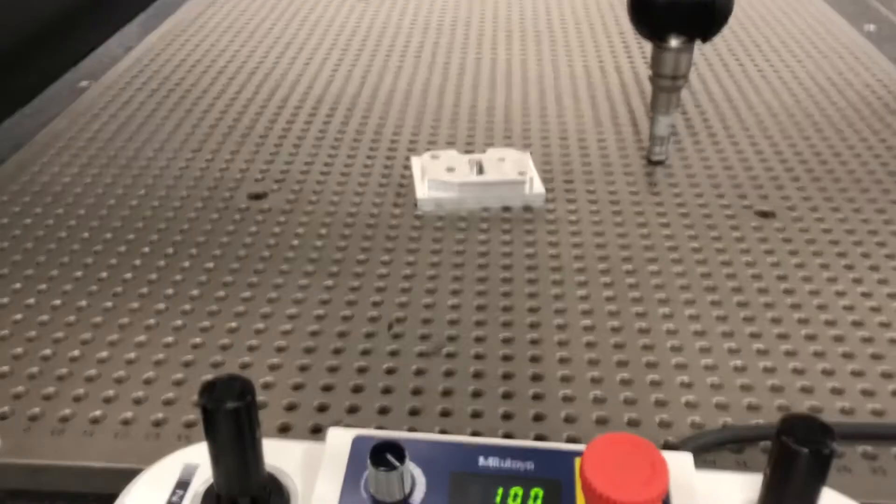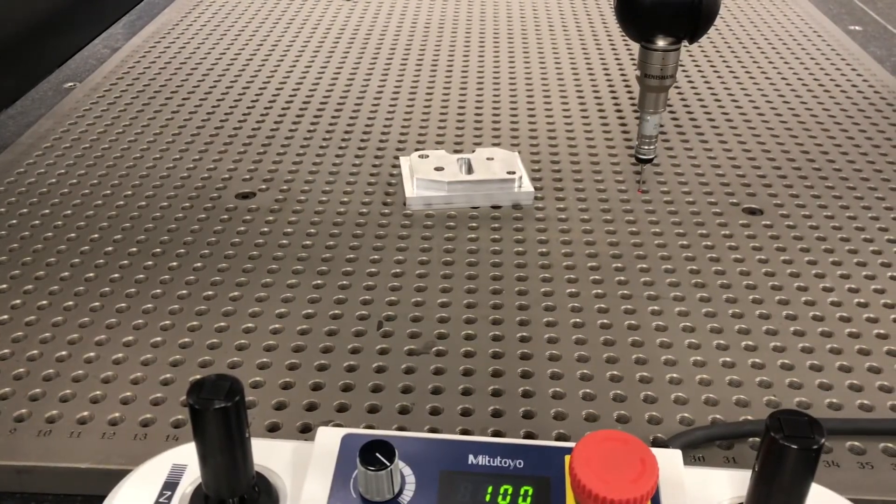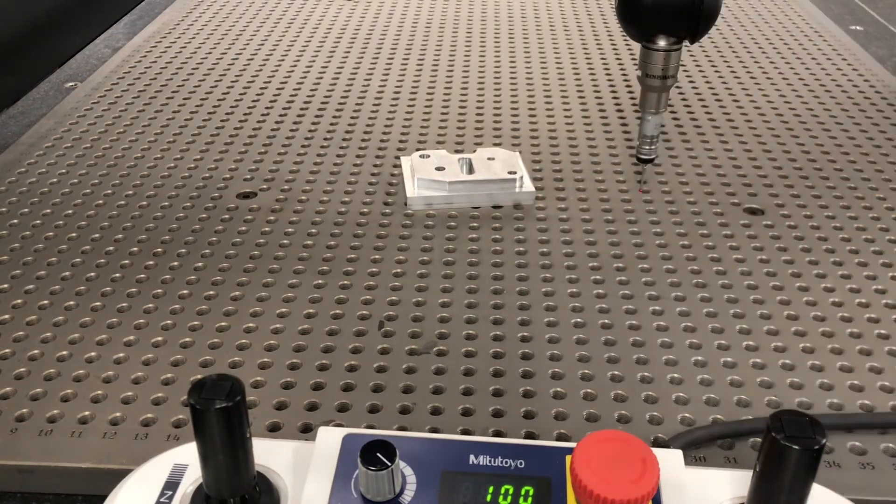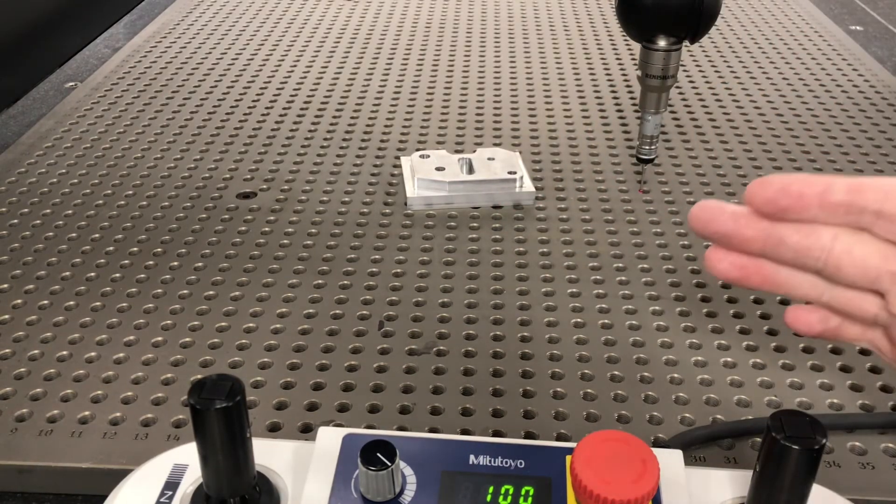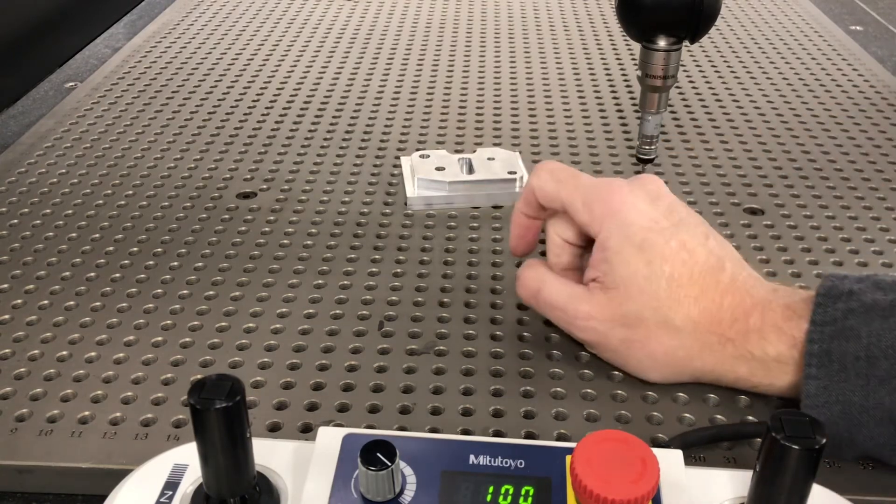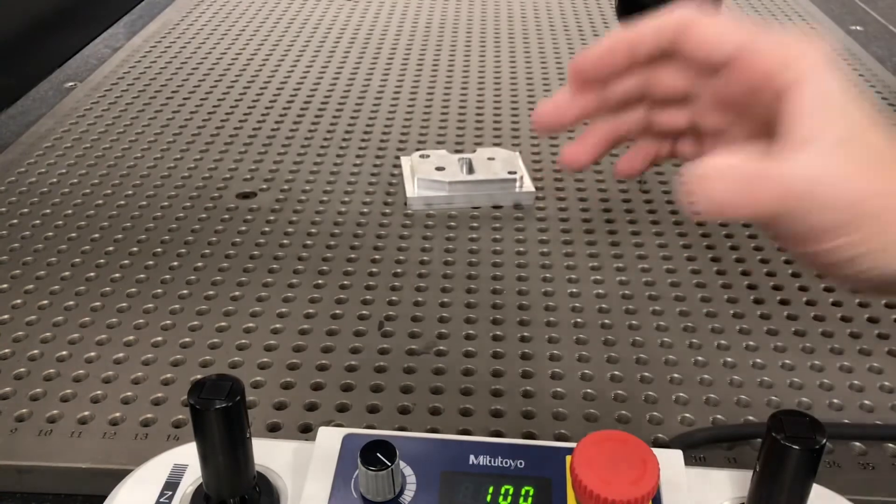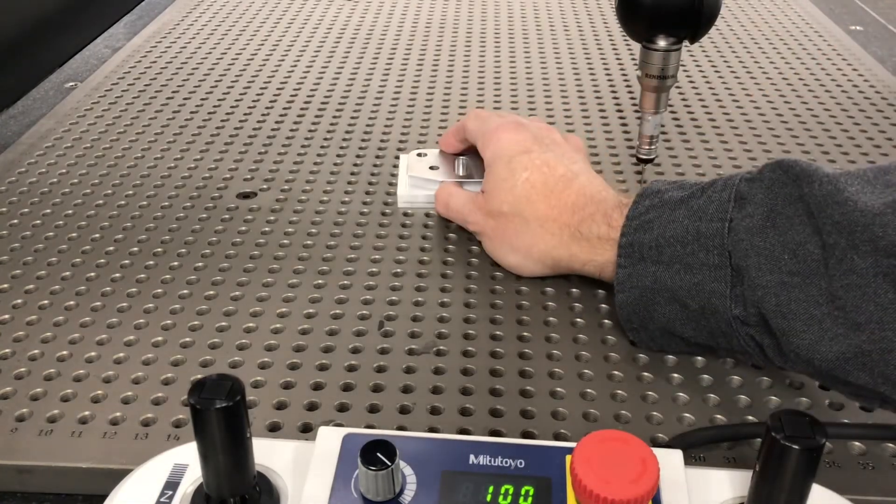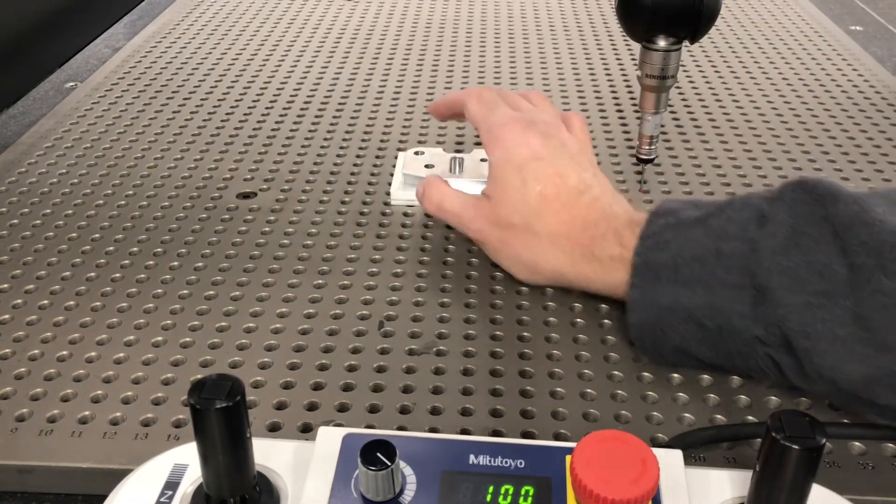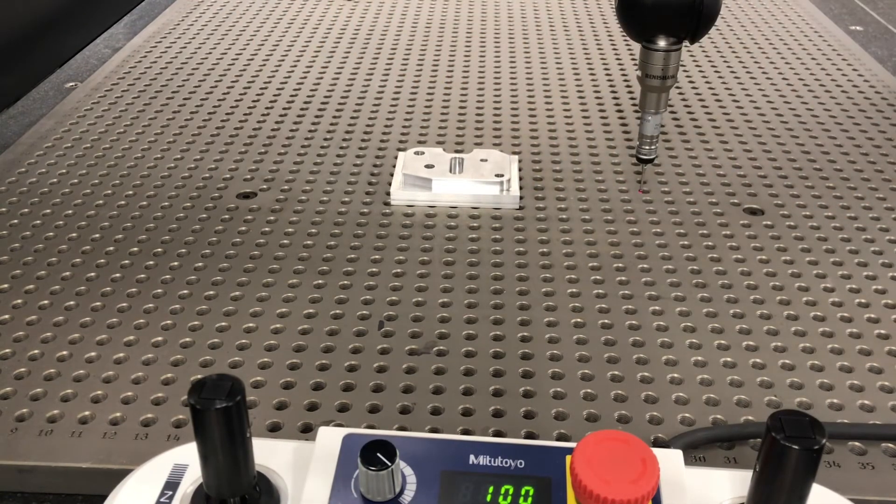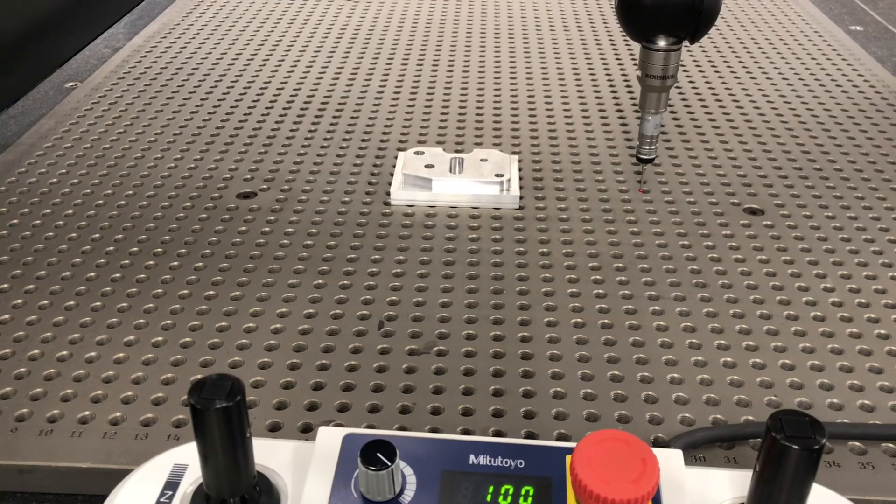And again. It doesn't matter that my part is set on an angle. Because when I created my origin and I set my origin. It basically in the computer's brain. It is now sitting perfect with the axis. Because it does the math in it. So that's how to manually do an alignment on the plane line line.